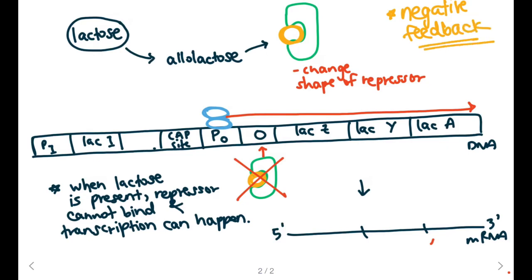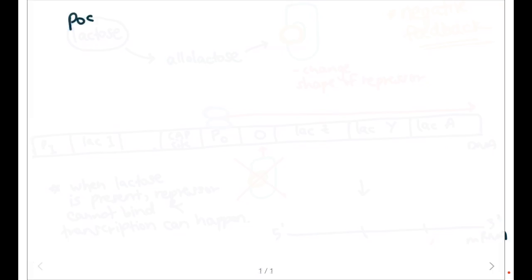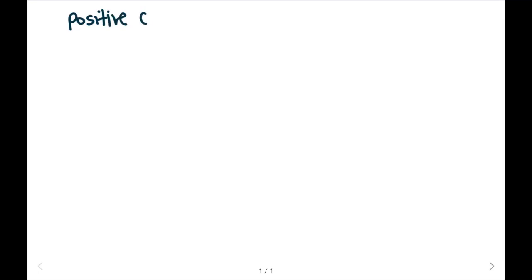Since the repressor protein can turn the lac operon off, we call this negative feedback or negative control. But in addition to this we also have positive control. Positive control or positive feedback is through the CAP molecule. Before we discuss this mechanism, let's talk about two key acronyms. The first is CAP and the second is cAMP.